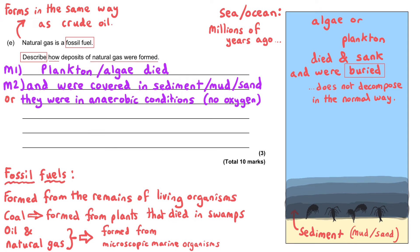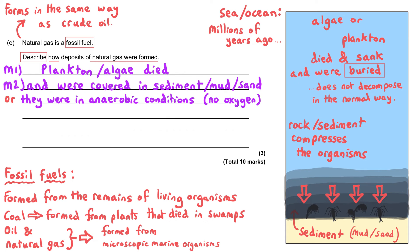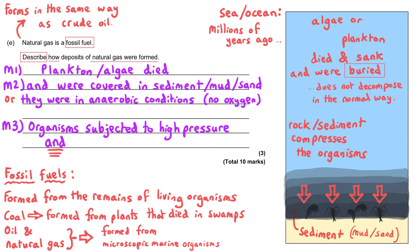In addition to denying oxygen, there is layer upon layer of rock forming at the bottom of the ocean, which subjects the remains to extremely high pressure. The remains are also subjected to really high temperatures. To get the third marking point, you need to include reference to both the high temperature and the high pressure — not just one of them.